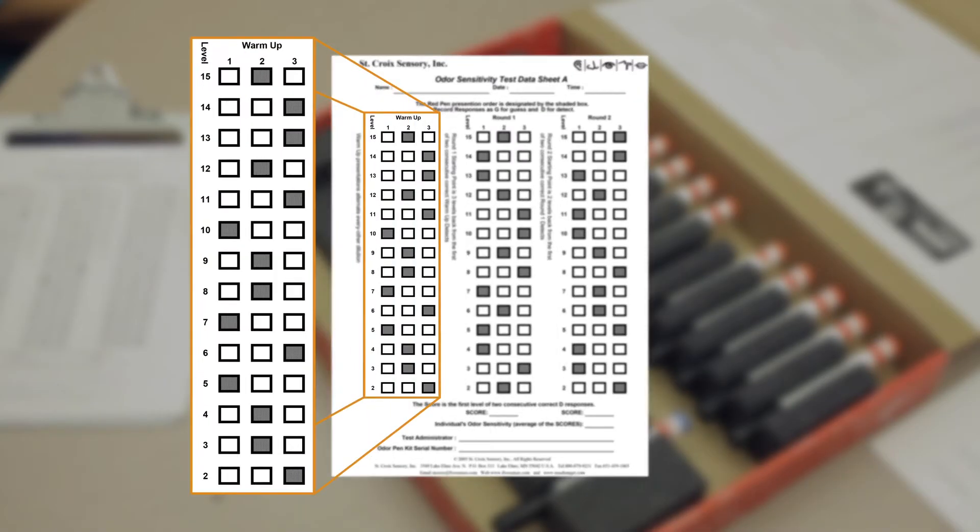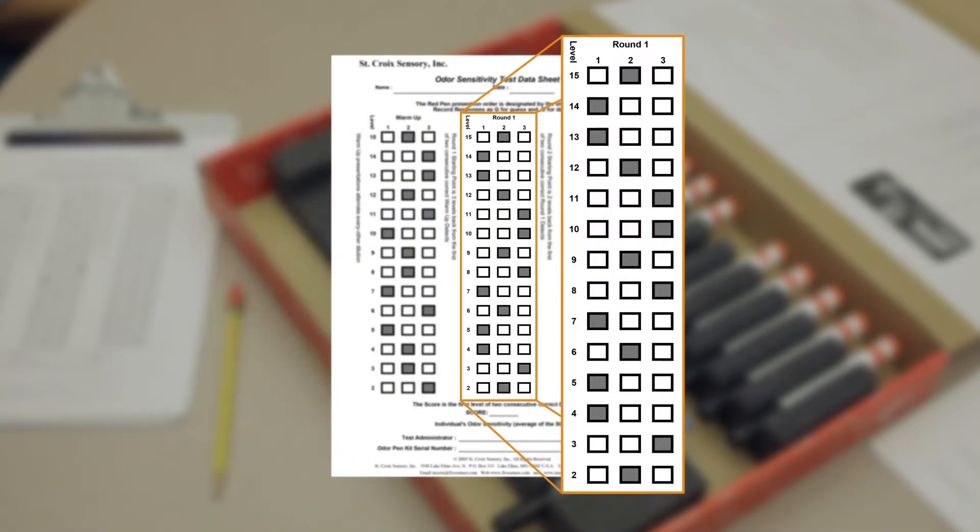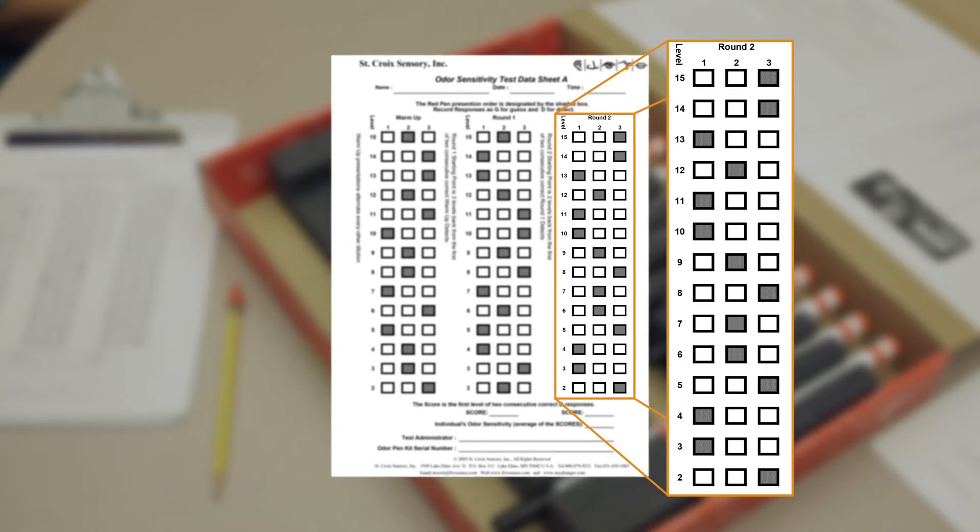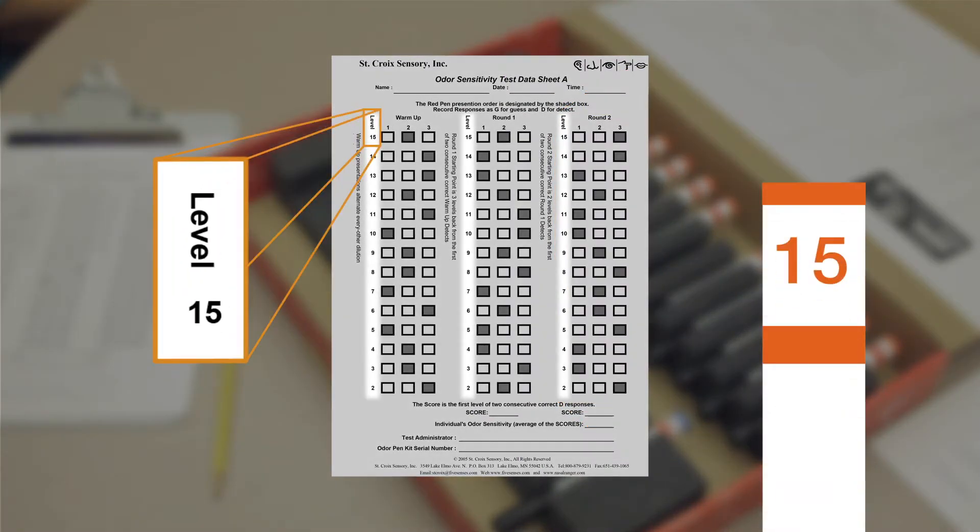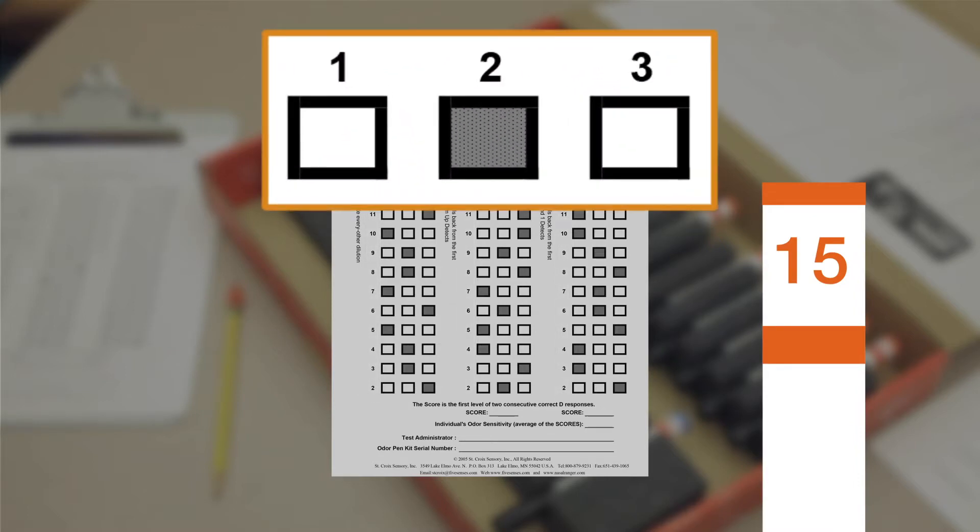The test administrator will record the results on the data sheet. The data sheet has three columns. The first column is the warm-up, the second column is for round 1, the third column is for round 2. The numbers down the column represent the butanol pen numbers. The test is a common three-alternative force-choice method.